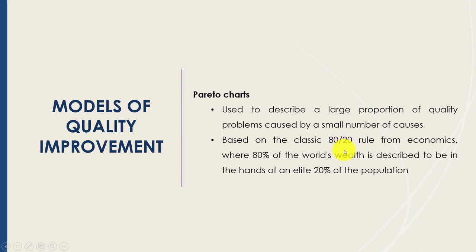The 80/20 rule was first described back in Renaissance-era Italy — the observation was that 80 percent of the wealth was in the hands of only 20 percent of the population. Applied to quality improvement, 80 percent of the problems seen in a particular phase of healthcare can be attributed to 20 percent of the factors. This allows us to focus on the vital few factors most responsible for influencing quality.